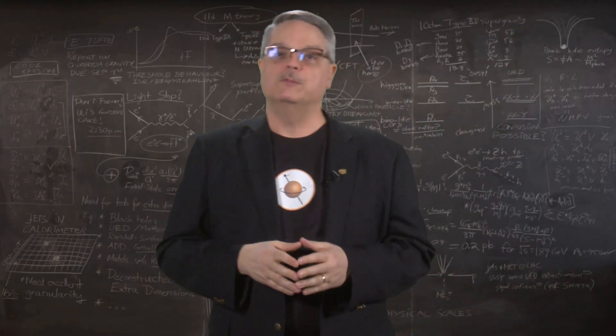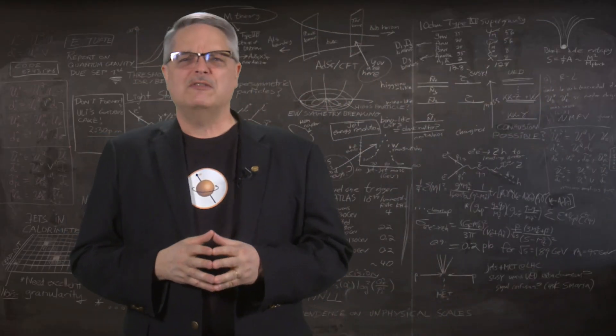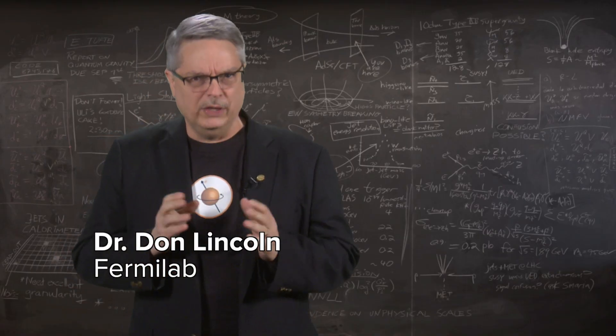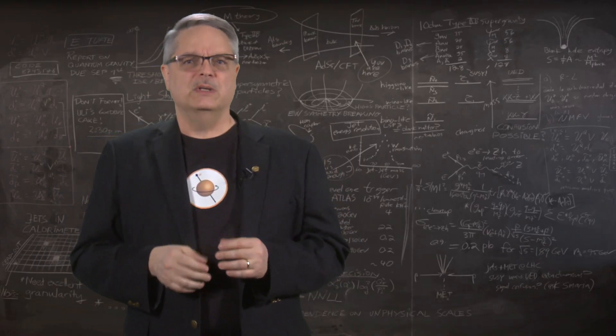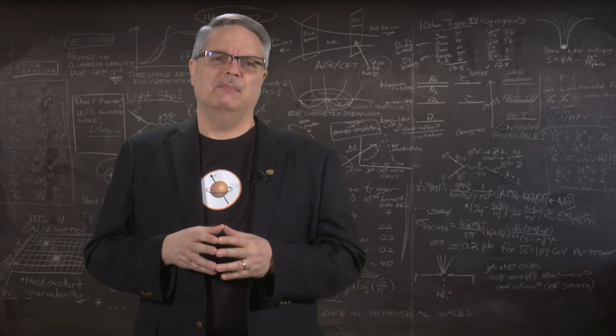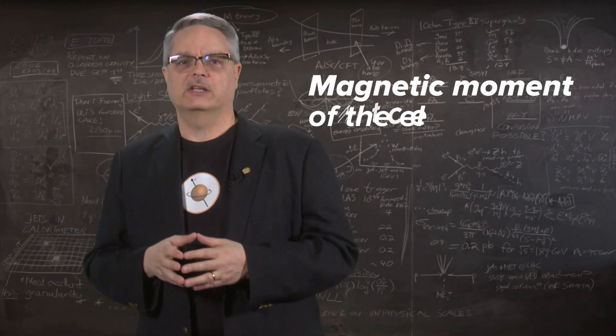Precision is something that is valued in experimental science. And while there are many precise measurements that have been made over the years, there is one that is truly impressive. And that is the measurement of how strong a magnet an electron is. The technical term for that, by the way, is the magnetic moment of the electron.